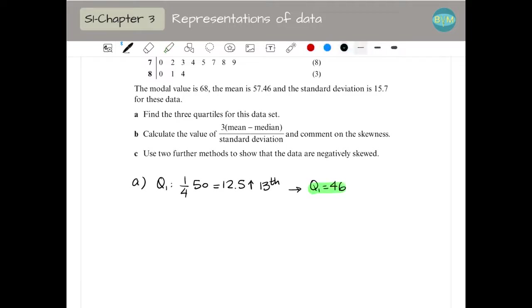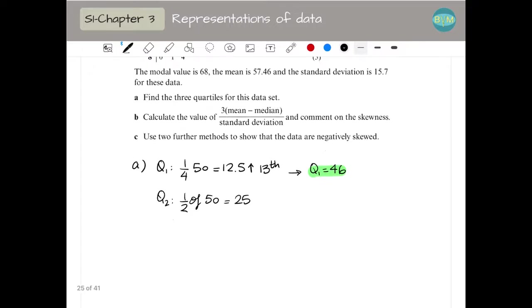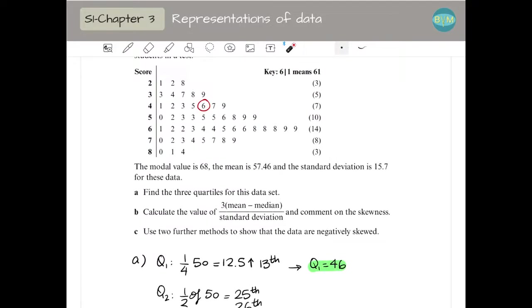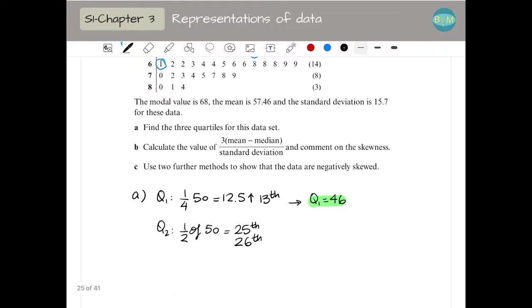Then for Q2, I'm going to check the mid value. So one half of 50 is 25. When it's a whole number, I check the 25th and the next one, the 26th, and I find the mid value. So I'm going to check the mid value between the 59 and the 61, which is 60. So Q2 is the mid value between 49 and 61, which is 60.